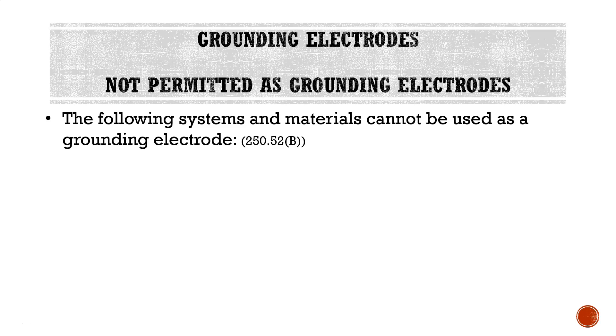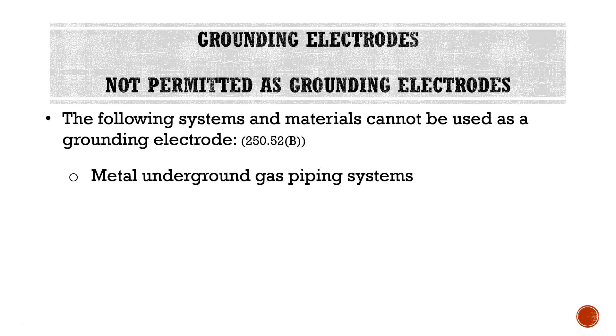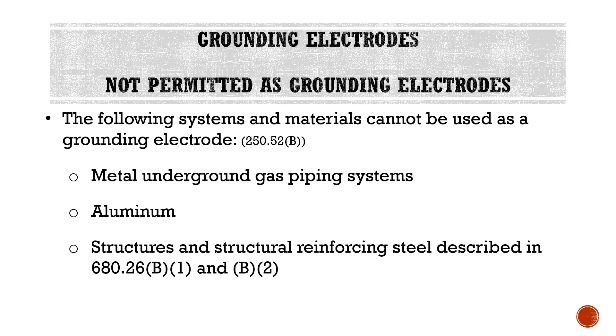There are items not permitted to be used as a grounding electrode. Anything outside the listed types — unless specifically listed as suitable — cannot be used. However, the code gives us some specific things that, regardless of listing or labeling, we cannot use as a grounding electrode. The following systems and materials cannot be used: number one, metal underground gas piping systems. Note that while we cannot use gas piping as a grounding electrode, we are required to bond to metal gas piping — we'll cover that when we discuss bonding. Number two, aluminum. And number three, structures and structural reinforcing steel described in 680.26 B1 and B2.